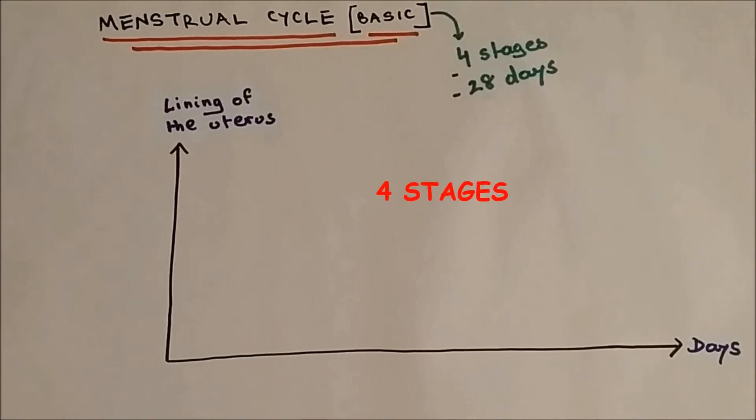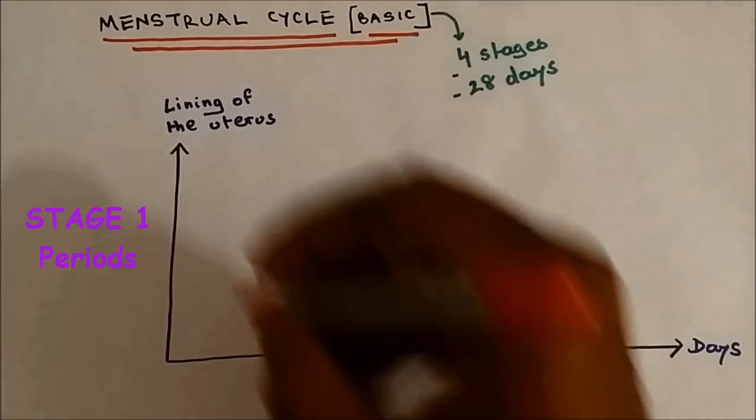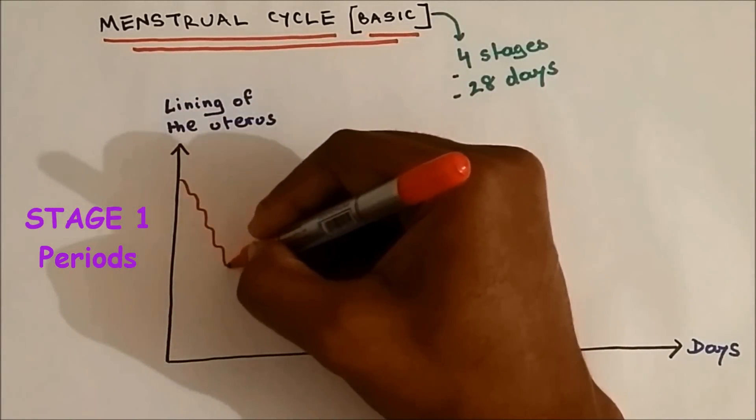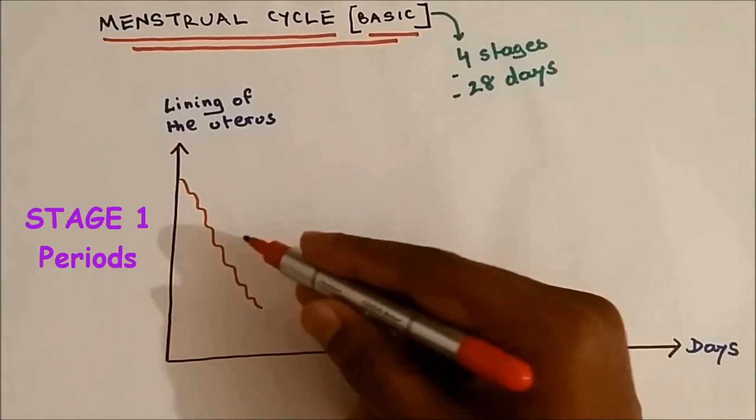Like I mentioned before, there are four stages in the menstrual cycle. The first stage is period, where the lining of the uterus breaks down and this is when the bleeding starts.